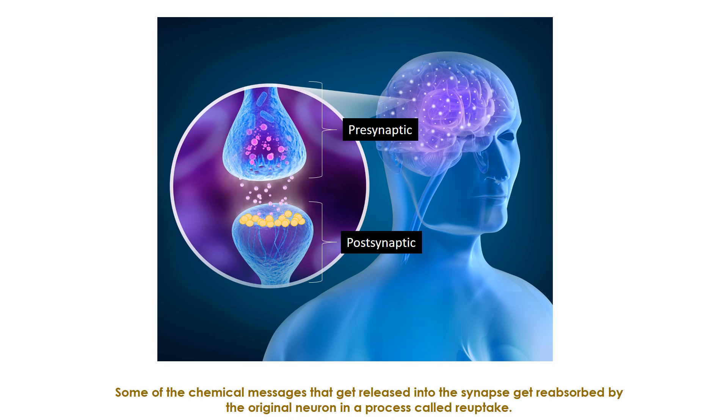Some of the chemical messages that get released into the synapse get reabsorbed by the original neuron in a process called reuptake.